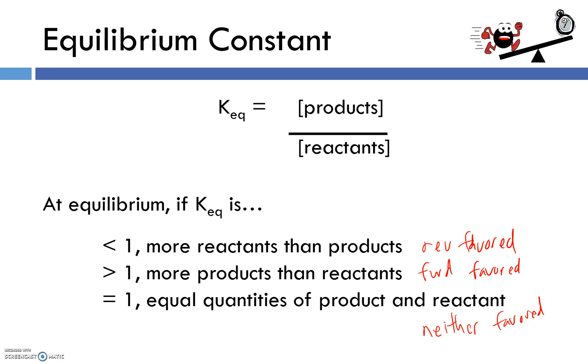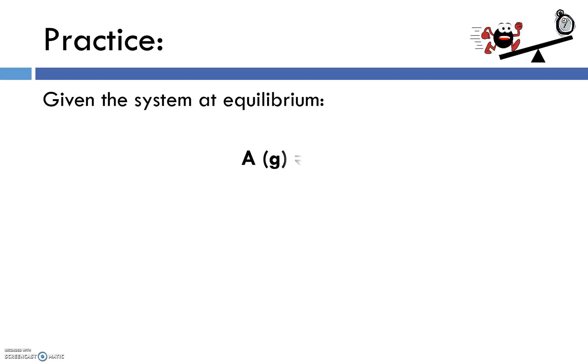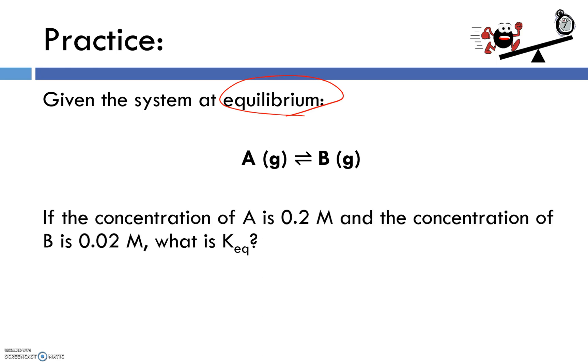And that's really it for the first part of the lesson. We're going to calculate some KEQ values and then use that information, basically compare KEQ to one, to figure out which reaction, if either, were favored at equilibrium. So let's try out a simple example. We've got a system at equilibrium, and if I haven't stated it already, it's definitely worth mentioning KEQ is for systems that we know are at equilibrium. Let's say that at equilibrium the concentration of A is 0.2 molar and the concentration of B is 0.02 molar. What is KEQ?